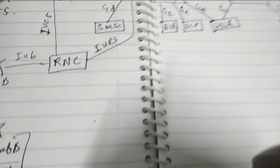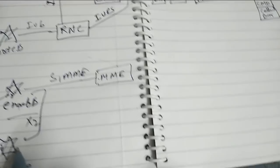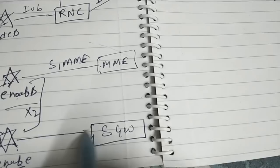Now let's say this eNode B is connected to the nearest MME by S1-MME interface. This eNode B is connected to the nearest SGW by S1-U interface. And the interface between the MME and SGW is S11 interface.